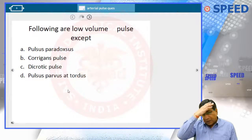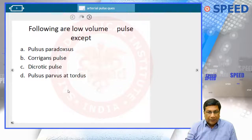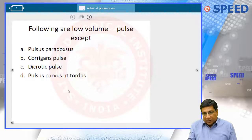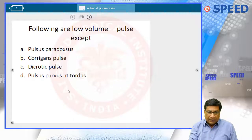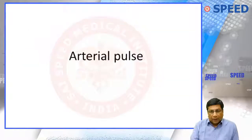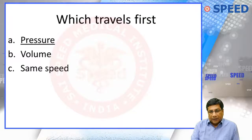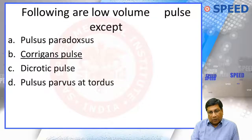The question asks: what are the low volume pulses, except? We have been given a number of pulses. Pulsus paradoxus, which happens in pericardial disease, is a low volume pulse. Dicrotic pulse occurs in shock and fever, so naturally it is low volume. Pulsus parvus et tardus happens in aortic stenosis — naturally it is low volume. The one pulse which is not a low volume pulse is Corrigan's pulse, because Corrigan's pulse is seen in aortic regurgitation — it is a high volume pulse. All the other three are low volume pulses.